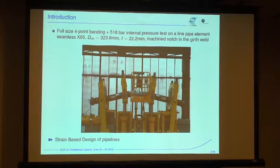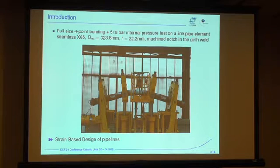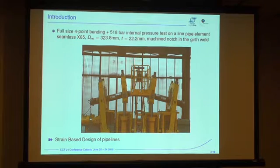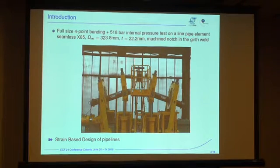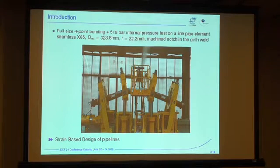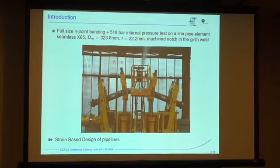The length of the pipe is about 6 meters, so we're making a four-point bending test. The diameter is about 30 centimeters. It's a thick pipe, 22 millimeters. It's pressurized inside — the pressure is about 500 bars — and then we make the bending test. You have actually two parts which are welded; there's a girth weld, and inside the girth weld there is some kind of a notch which was machined before the test.